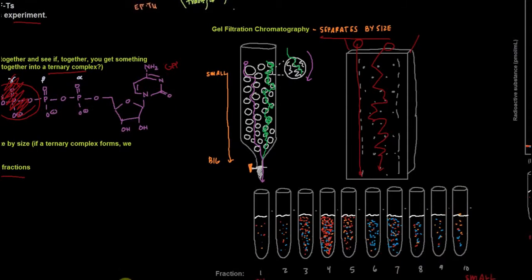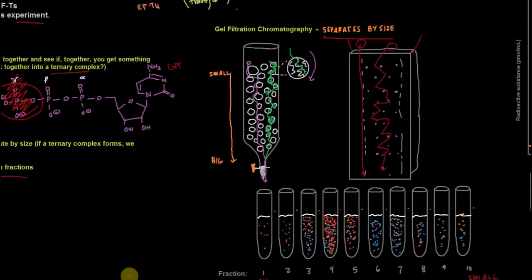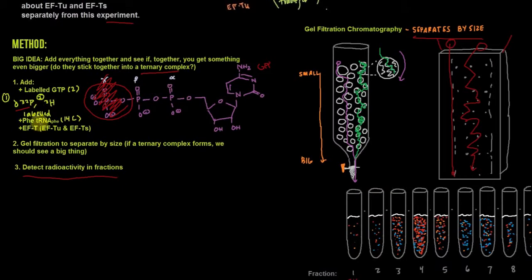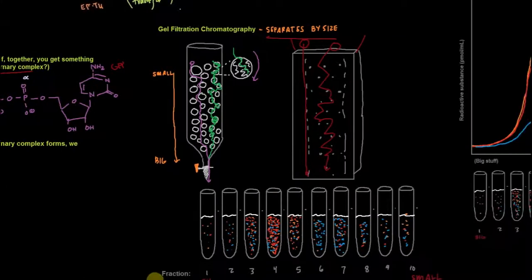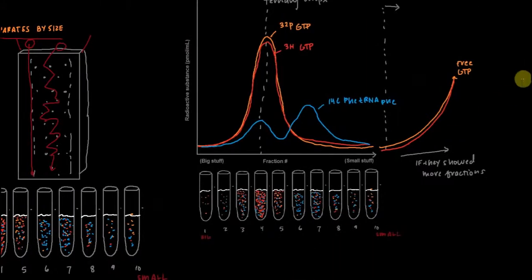Now that we understand gel filtration chromatography, in the context of a ternary complex, because it combines these three things—GTP, phenylalanine tRNA phenylalanine, and EF-T—we would expect that to be big, bigger than each of their constituent parts. Now let's take a look at what the data is.